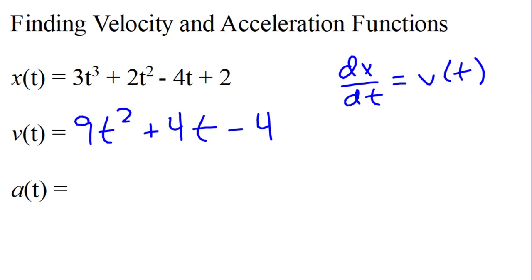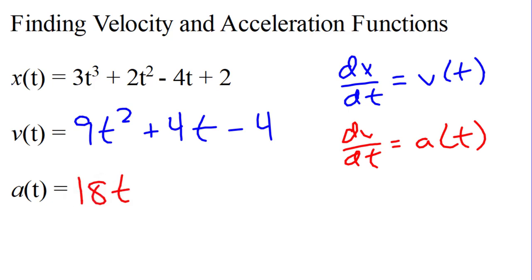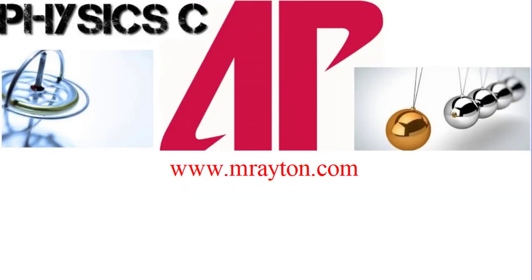When I want the second derivative of the position — or the first derivative of the velocity — I take dv over dt, which gives me the acceleration as a function of time. Using the power rule again: 9 times 2 is 18, giving t to the first power; plus 4. That is my acceleration function. I can continue to the third and fourth derivative and so on, and that gives me my functions as we go along.